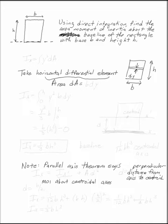Using direct integration, find the area moment of inertia about the baseline of the rectangle, not the midline, with base b and height h.